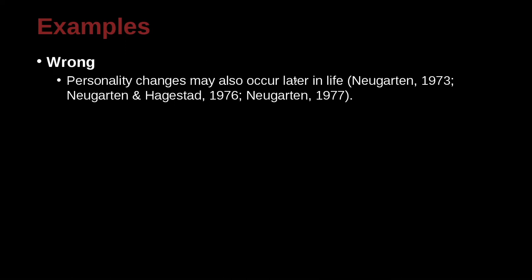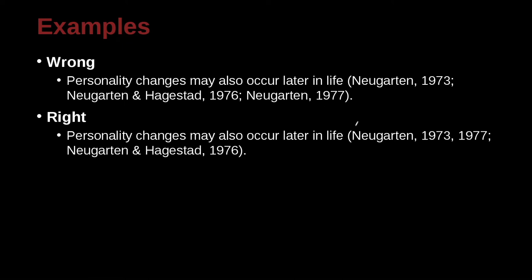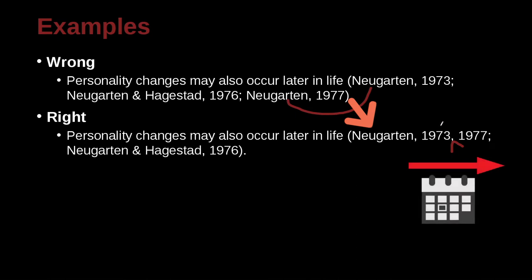Personality changes may occur later in life (Neugarten, 1973, 1977; Neugarten & Hasgard, 1976). So in this case, we have the same author with different years. We take Neugarten, since he's the same person, and combine the dates by splitting them with a comma. Which one goes first? The smallest date goes first — so 1973 is first, 1977 is second because 1977 is later.